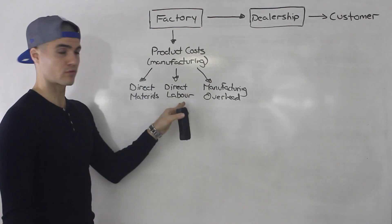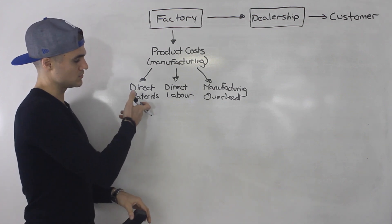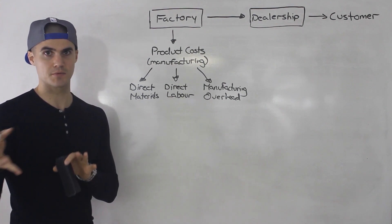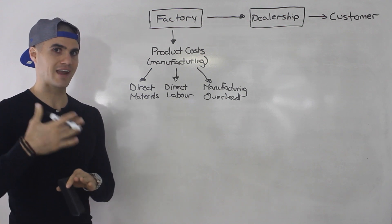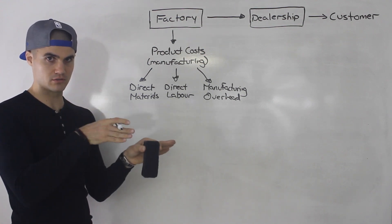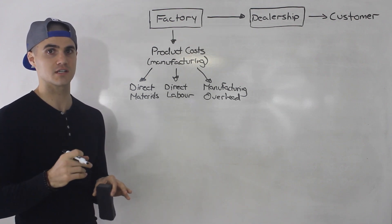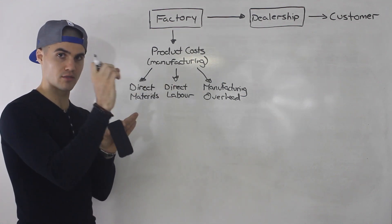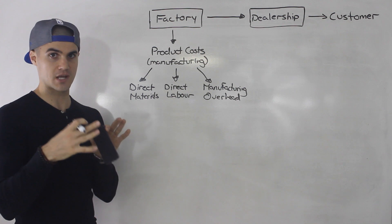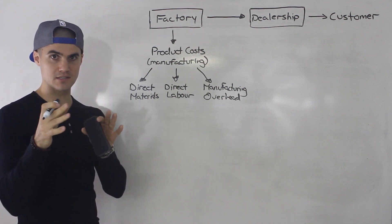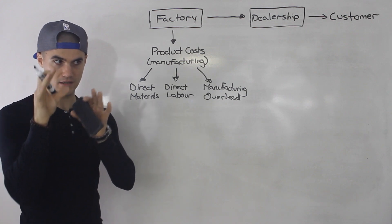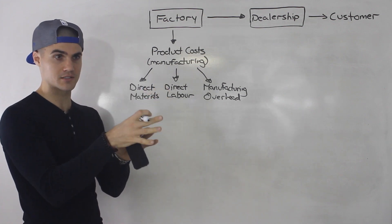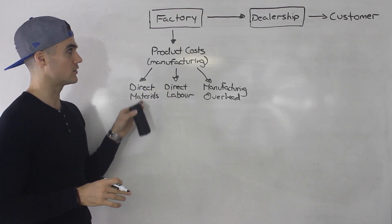So what I want to do is go over each of these briefly. Direct materials — the way I like to think about it is basically any materials that are directly traceable to the product. Traceability is another concept you're going to see come up. Basically, can you see the material going on the product? For example, with a car — if we take paint and we're painting the car, I could see the paint go on the car. It's observable; it's traceable to the product.